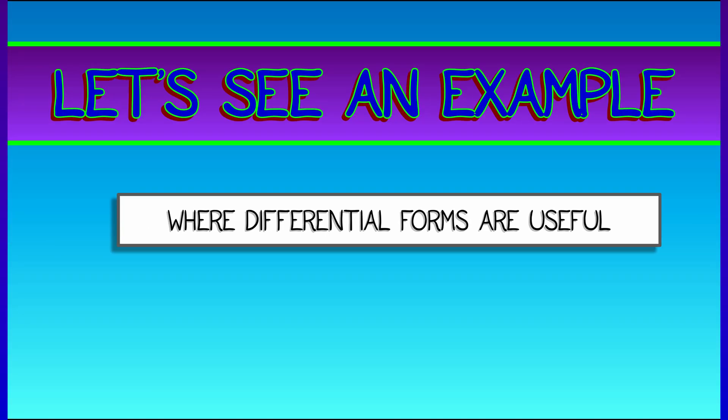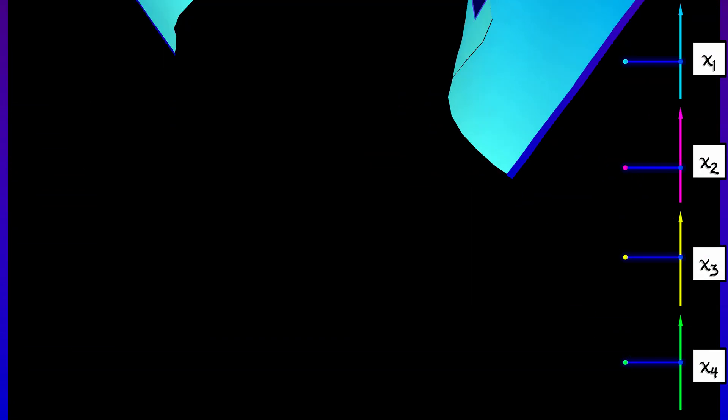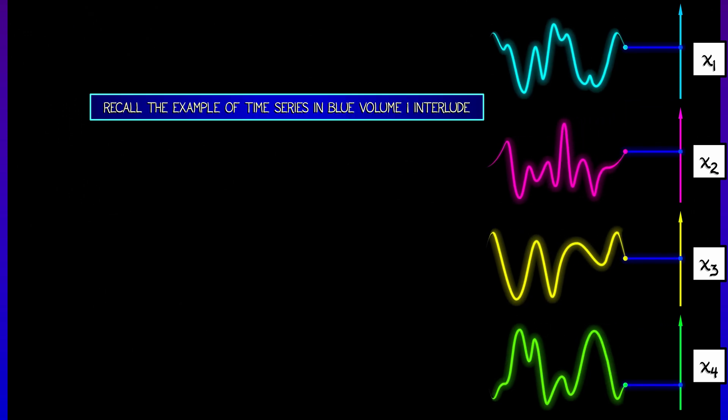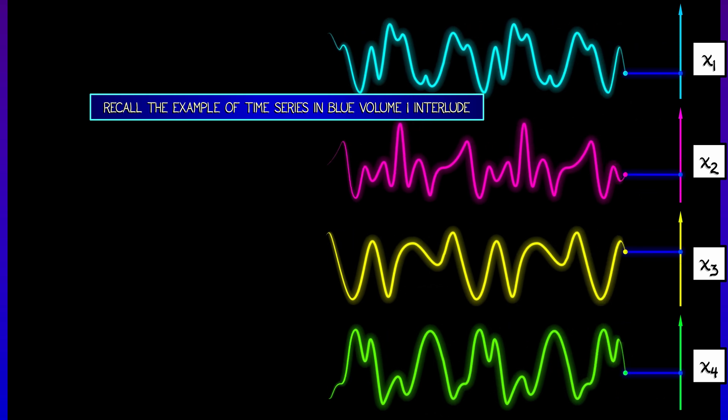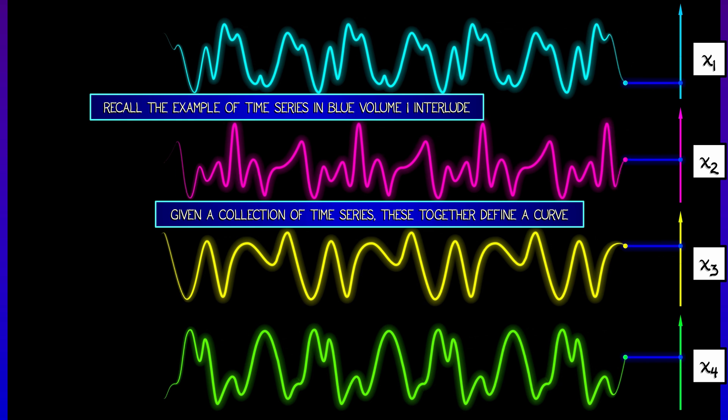Let's see an example where differential forms are really useful in the context of data. This is something that I have wanted to show you for so long. Let's think back. Let's think way back to the interlude of volume one, where we introduced a fun little example involving time series data, signals that evolve over time.